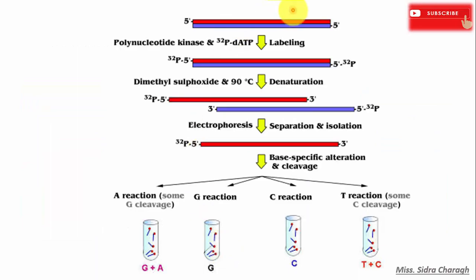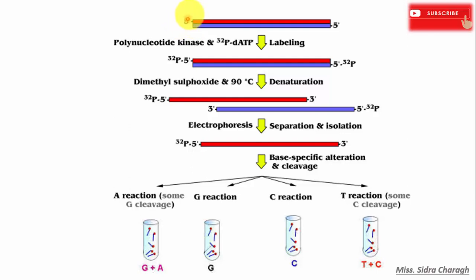Here is double-stranded DNA. The first step in Maxim-Gilbert sequencing is end labeling — we need to label the five prime end. To add a label, we first remove the five prime phosphate group using the enzyme alkaline phosphatase, which cleaves the five prime phosphate group, creating a free five prime OH group where the new P32-labeled phosphate will attach with the help of polynucleotide kinase.